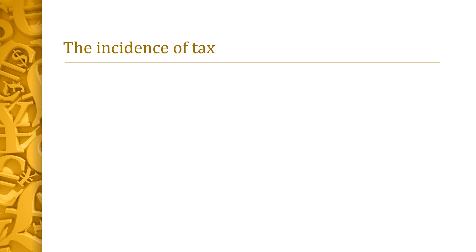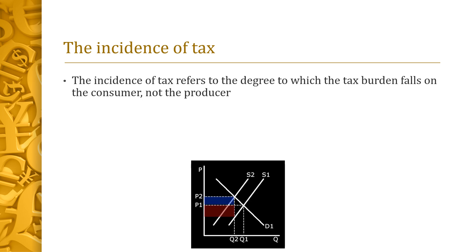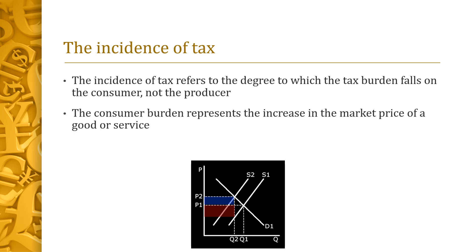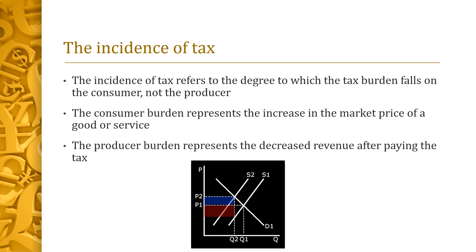The incidence of tax refers to the degree to which the tax burden falls on the consumer and not the producer. The consumer burden represents the increase in the market price of a good or service after a tax is imposed. The producer burden represents the decreased revenue after paying the tax. The consumer burden can be seen below shaded in blue, and the producer burden shaded in red.